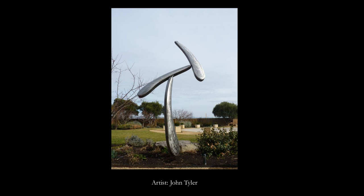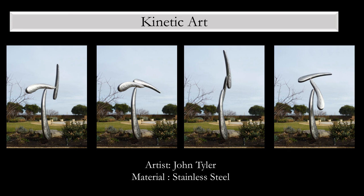Let's look at John Tyler's piece. It changes through time and space — here it appears very stationary, with a nice diagonal line and curve. But this piece actually moves. We can see it in its original position, then the sculpture changes to this, then to this, and then to that. It becomes kinetic because it actually moves.